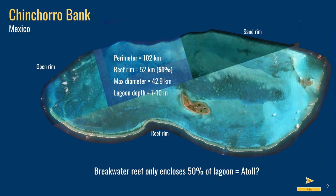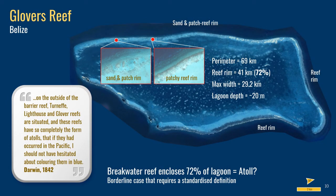Chinchoro Bank in the Mexican Caribbean also has a reefal rim of only 51% of the perimeter, with the other half rimmed by submerged sand banks and patch reefs — not breakwater reefs. I suggest it's actually a fringing reef that fronts a shallow submerged bank. Finally, Glover's Reef in Belize seems to be the perfect example of a Caribbean atoll, with the breakwater reef rim enclosing 72% of the lagoon. In my opinion Glover's is a borderline case, and classifying it requires us to first standardize the definition of atolls before we can say either way.